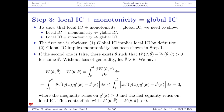So local IC and monotonicity together imply global IC — they are sufficient. After steps one through three, the reduced problem has the same objective, only one IR constraint, and local IC constraints instead of the full global IC set. Step four: temporarily ignore the monotonicity constraint. Find the optimal solution of this relaxed program, then verify the solution satisfies monotonicity. If it does, we're done.